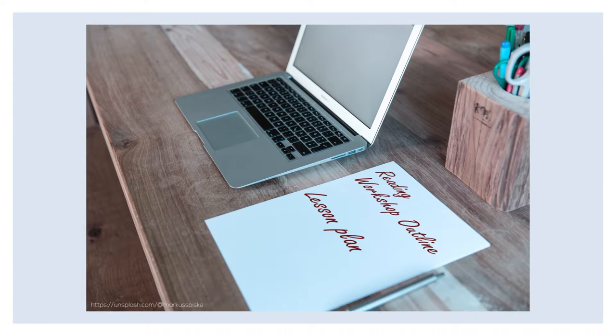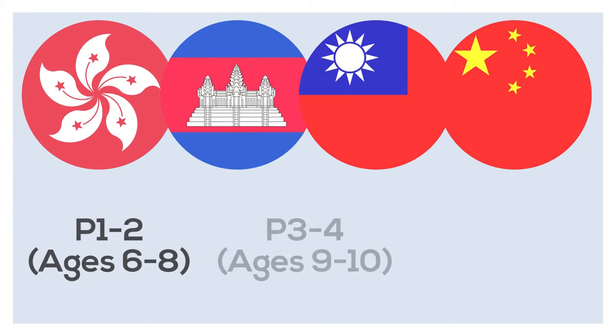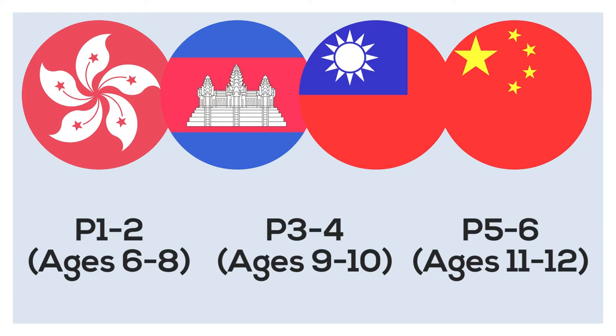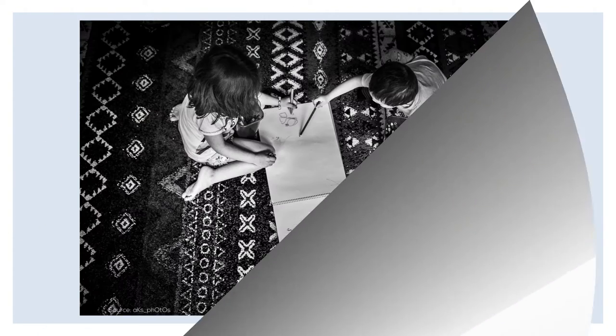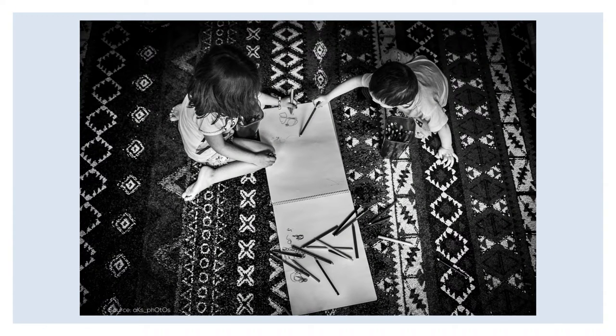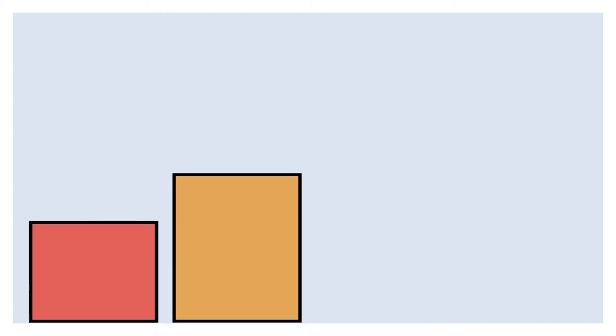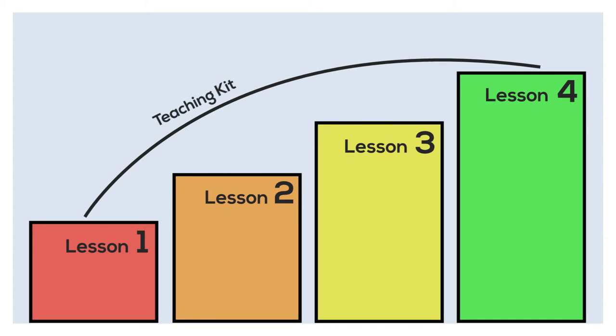As you can see from the two documents, you are required to plan four lessons. You might be wondering, why do I need four lessons to teach my story? Although you will be serving at different locations and teaching different age groups, your audience has one thing in common: disadvantaged backgrounds with very weak English and short attention spans. And so, you need to take your teaching step by step. That is why we require you to include four lessons in your teaching kit, as indicated in the reading workshop outline and lesson plan.